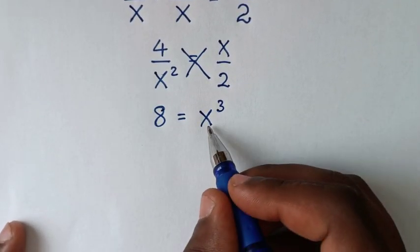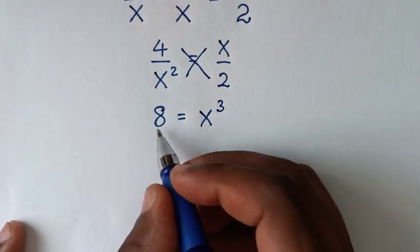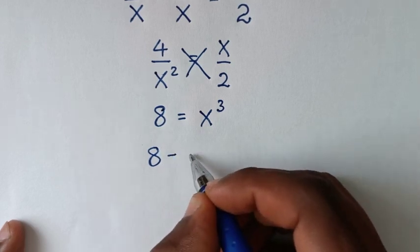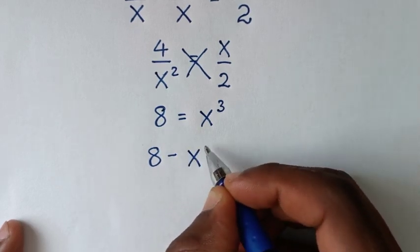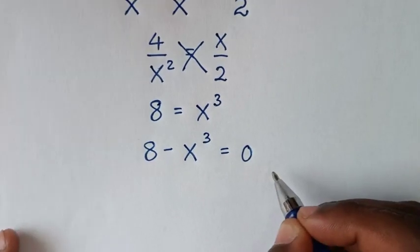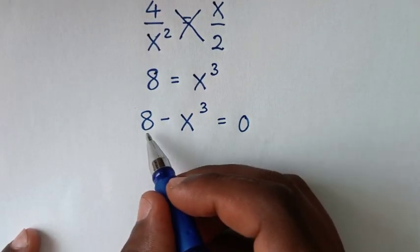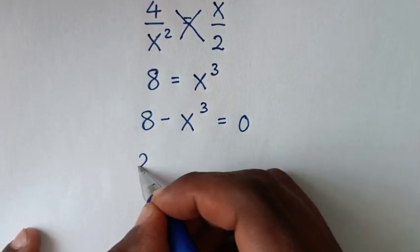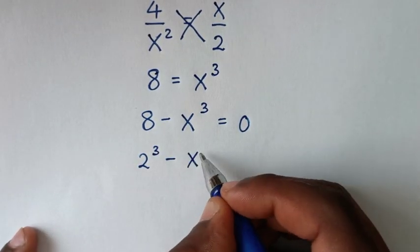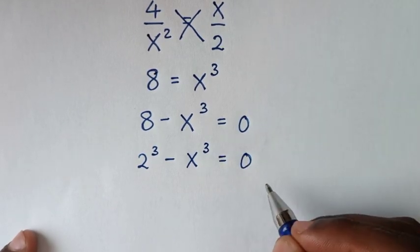Then we'll take x cubed to the left side, so it will be 8 minus x cubed is equal to 0. Then, 8 is the same as 2 cubed, so 2 cubed minus x cubed is equal to 0.